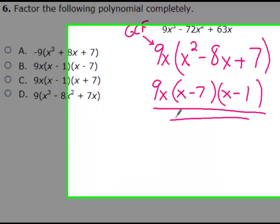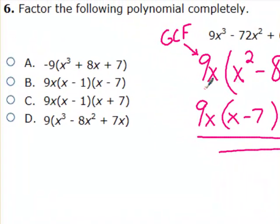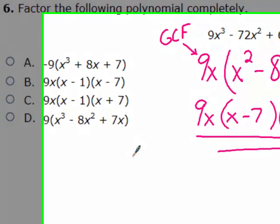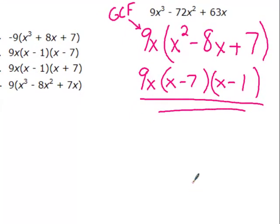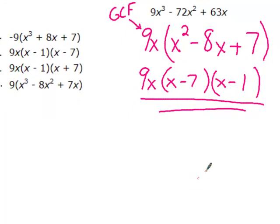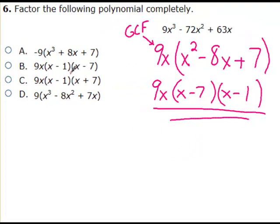This next problem involves factoring. We should know how to factor — with this trinomial, we need to factor out a 9x first. The GCF is 9x, which is common to all three terms. With multiple choice, we can rule out A and D right away since you need to factor out a 9x. We're not finished — there's still a trinomial that can be factored further. Since C is positive, the signs have to be the same; they both have to be negative because outers and inners must add up to negative 8. So my answer has to be B, and C is not going to work.